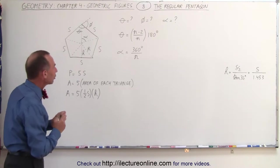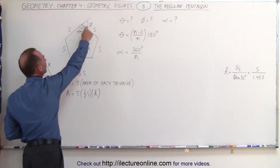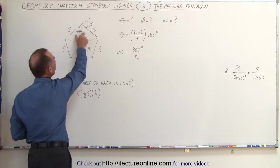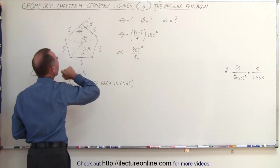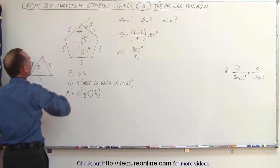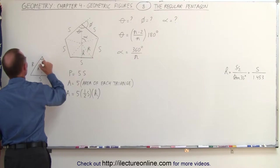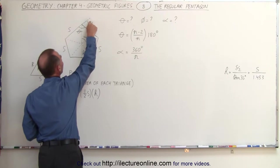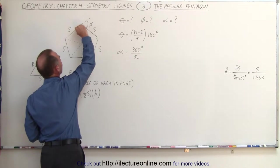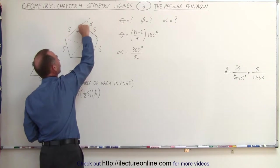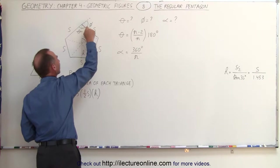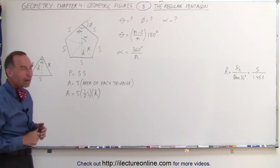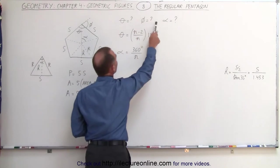Another thing we need to do is figure out the size of the angles. We have the five corner angles of the regular pentagon, which we'll call theta. We also have the angle at the tip of each triangle, which we'll call alpha. Then there's the supplementary angle to theta — the outside angle formed when a line continues along one side and meets the next side — which we'll call phi.